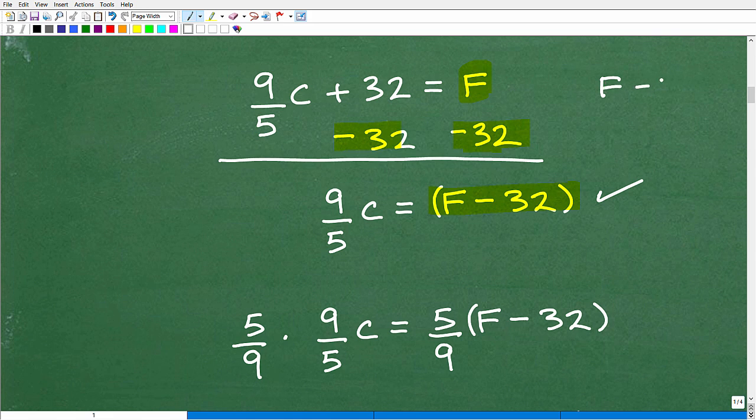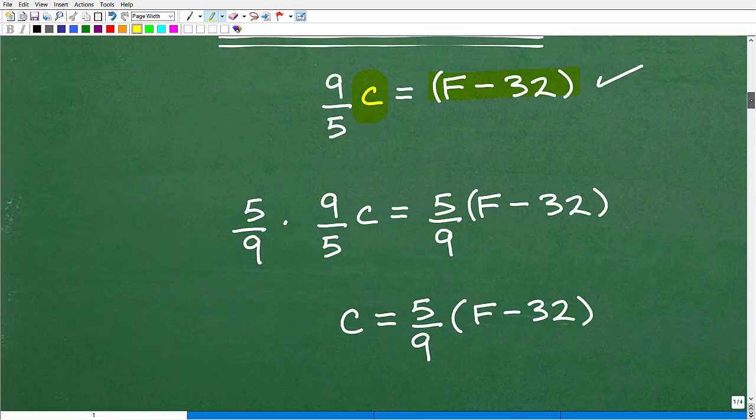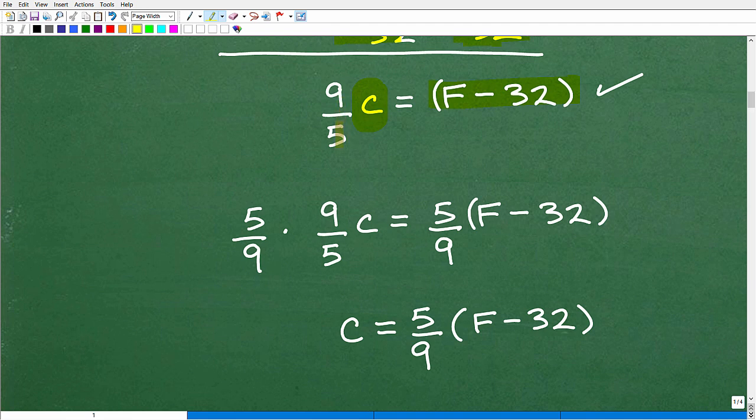I could have wrote this as F minus 32 by itself. But, again, when you're adding or subtracting with a variable involved, always put parentheses around it. It definitely will help you out. Okay, so I need to get C by itself. But right now I have 9 fifths in front of the C. So what can I do there? Well, I could just multiply this 9 fifths times 5 over 9. Multiply it by the reciprocal because when I do that, I get what? 1. I'll get a 1C because 5 over 9 times 9 over 5 is going to be 1. And I'm trying to solve for C or 1C. I wouldn't write it as 1C. I would write it as a C, but that's what it means.